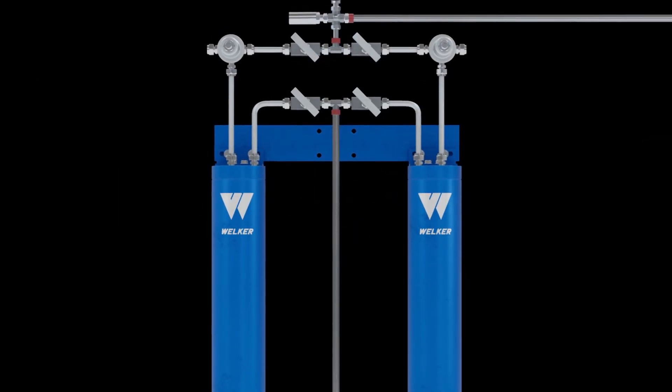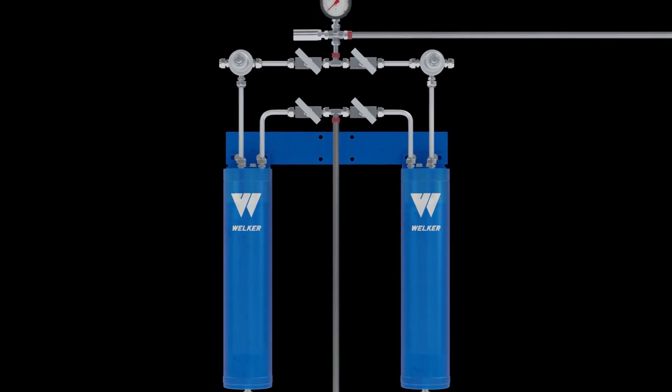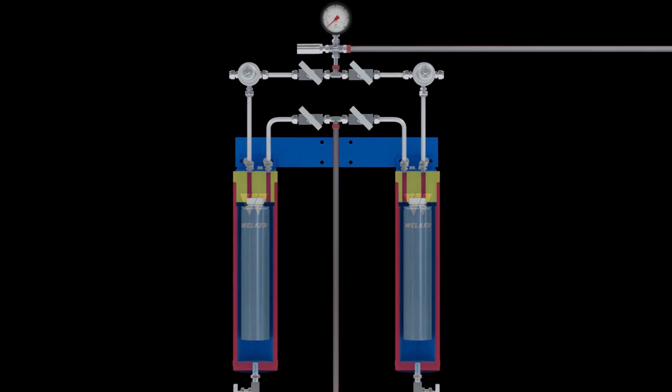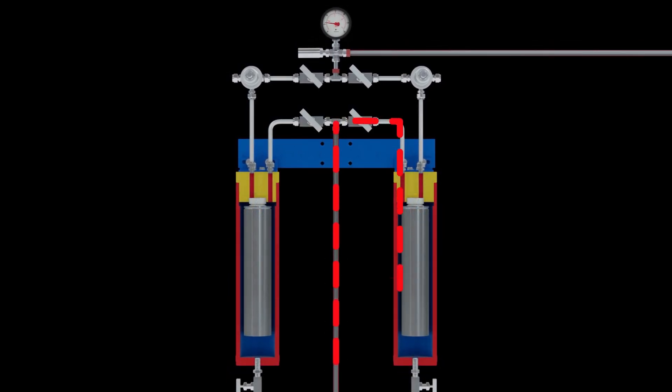Our Clean Flow Plus systems offer the superior protection of the Clean Flow but with the added benefit of automatic backup filtration. In these systems, the incoming natural gas is conditioned by the primary filter dryer and regulator. When the primary filter cartridge needs to be replaced, incoming flow is automatically diverted to the backup filter. This integrated backup system enables the Clean Flow Plus to operate for longer periods of time between cartridge changes.